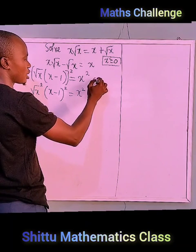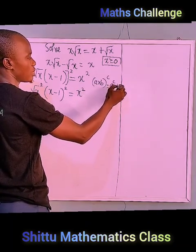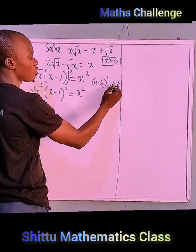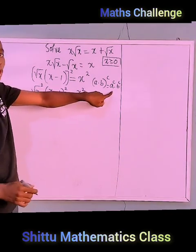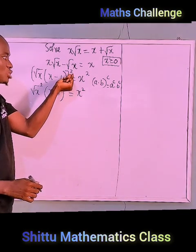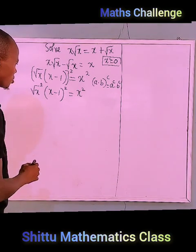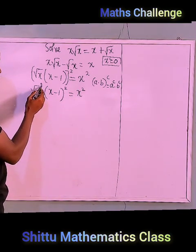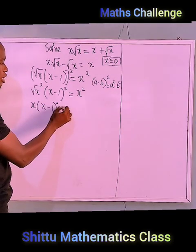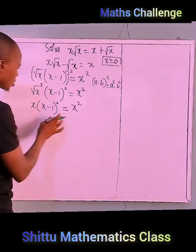This follows the law of indices where (a·b)^c = a^c · b^c. I apply this law here and distribute the power over what we have inside the parentheses. Considering the square of root x gives us x, so we have x times (x minus 1)² equals x².